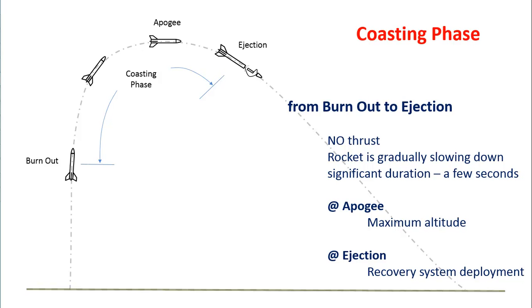However, at burnout, the rocket had a very high velocity. Since there's no more thrust being produced, gravity is going to gradually slow it down.